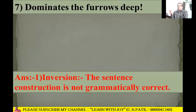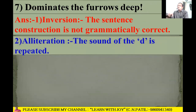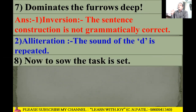Next line: 'Dominates the furrows deep.' Inversion again — the sentence construction is not in grammatical order. In correct grammatical order it would be 'The furrows dominates deep.' Alliteration is also there because the 'd' sound is repeated: 'd' in 'dominates' and 'd' in 'deep.'